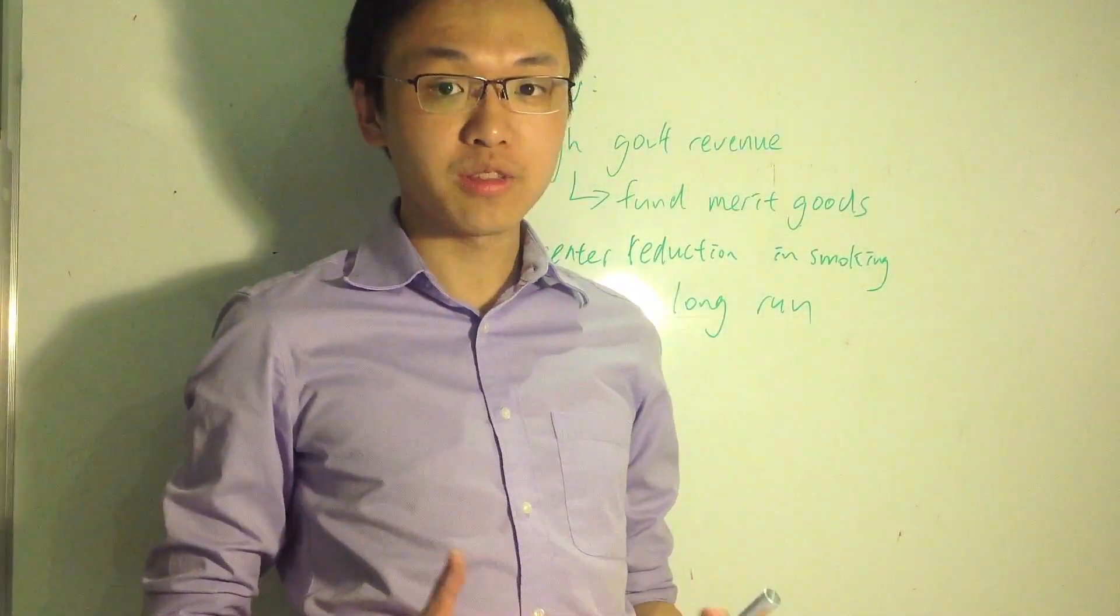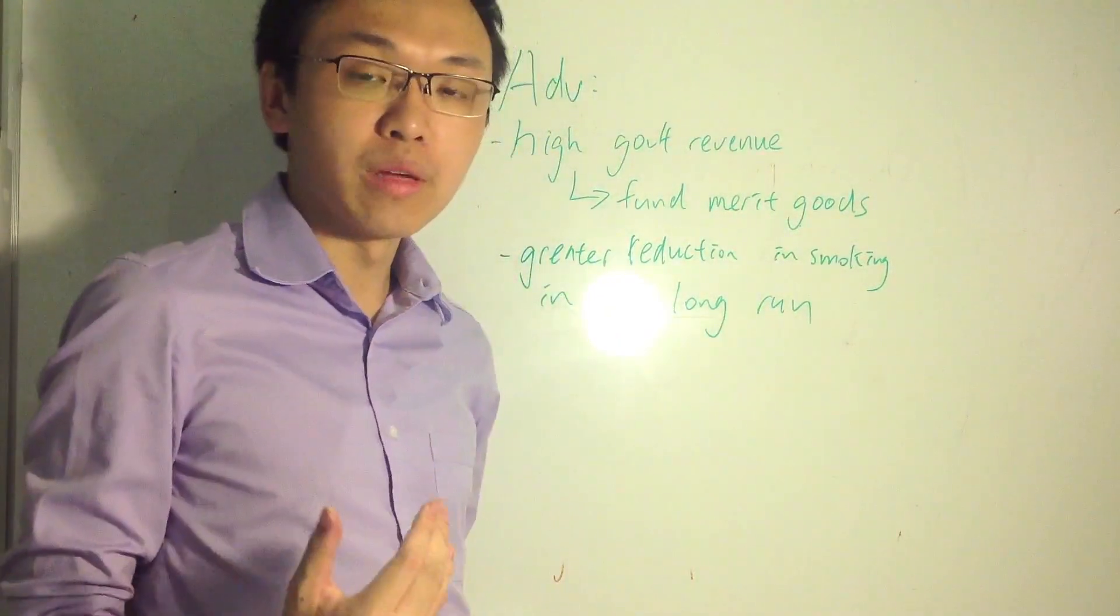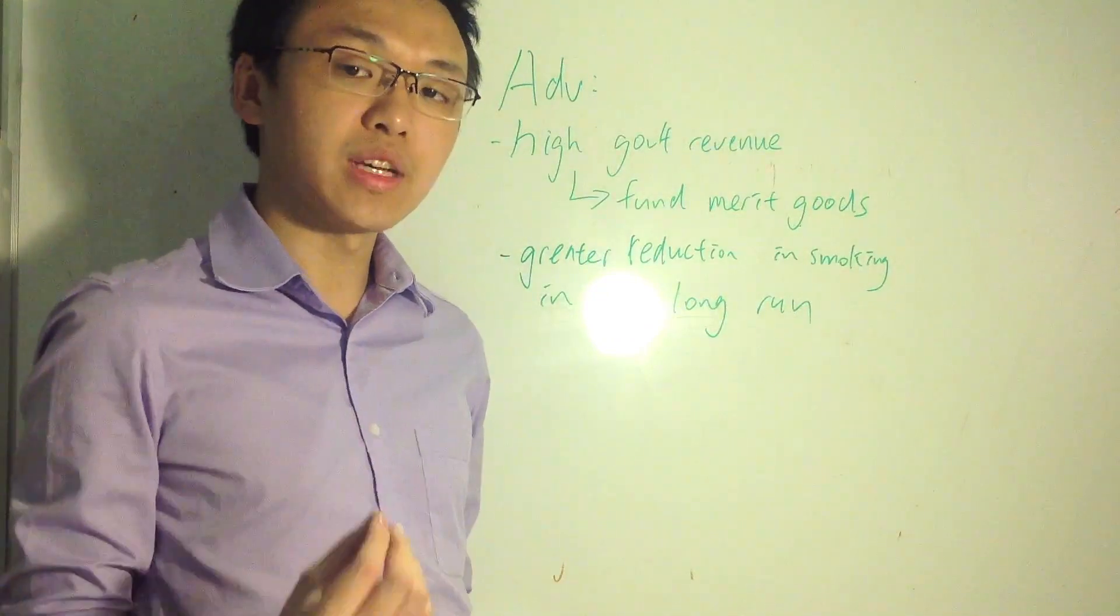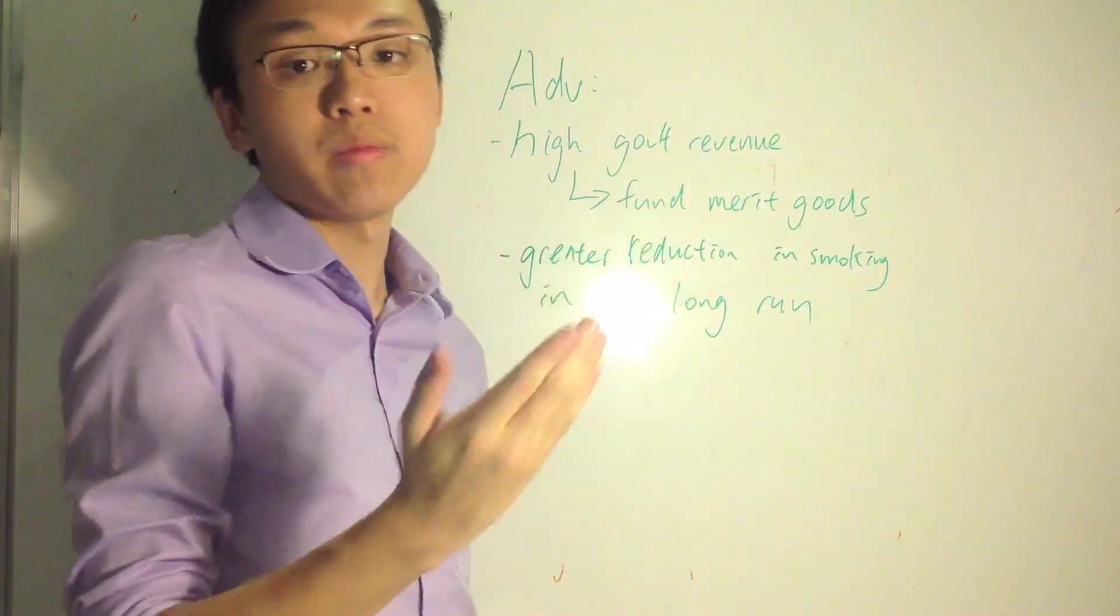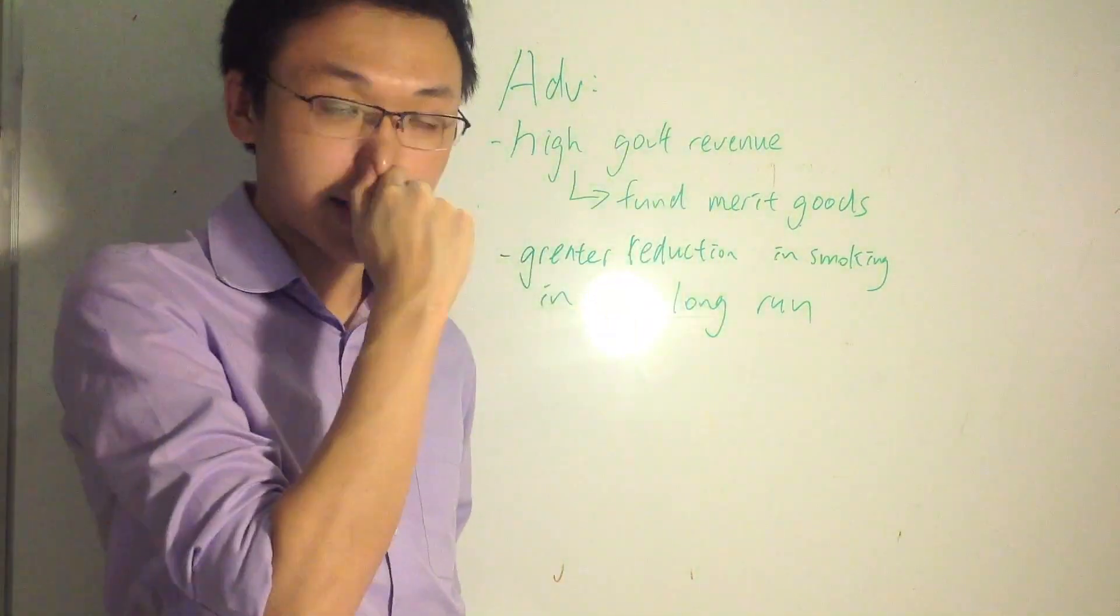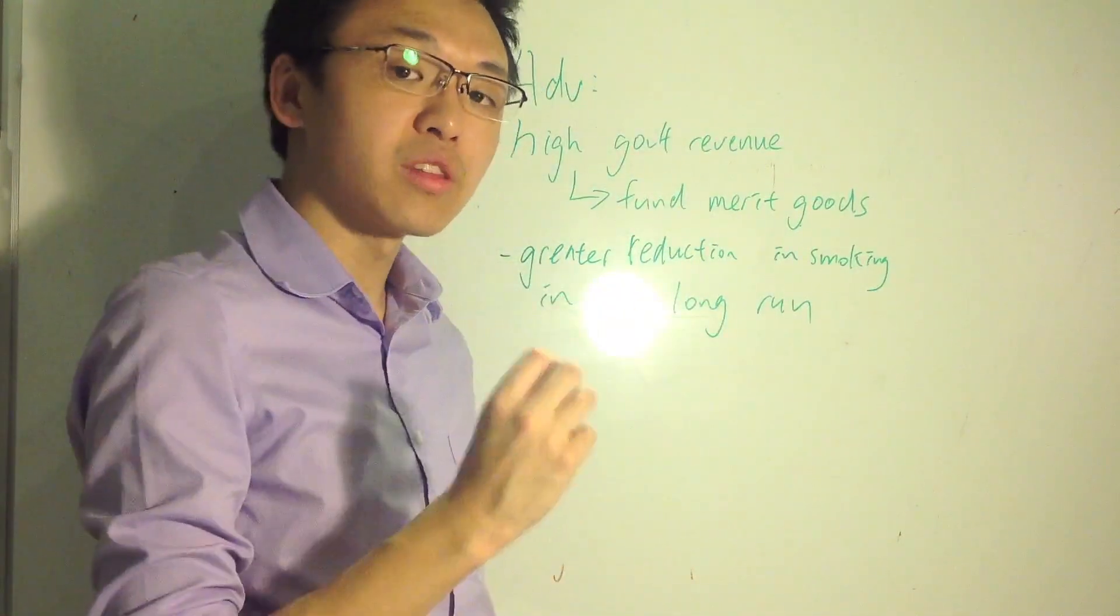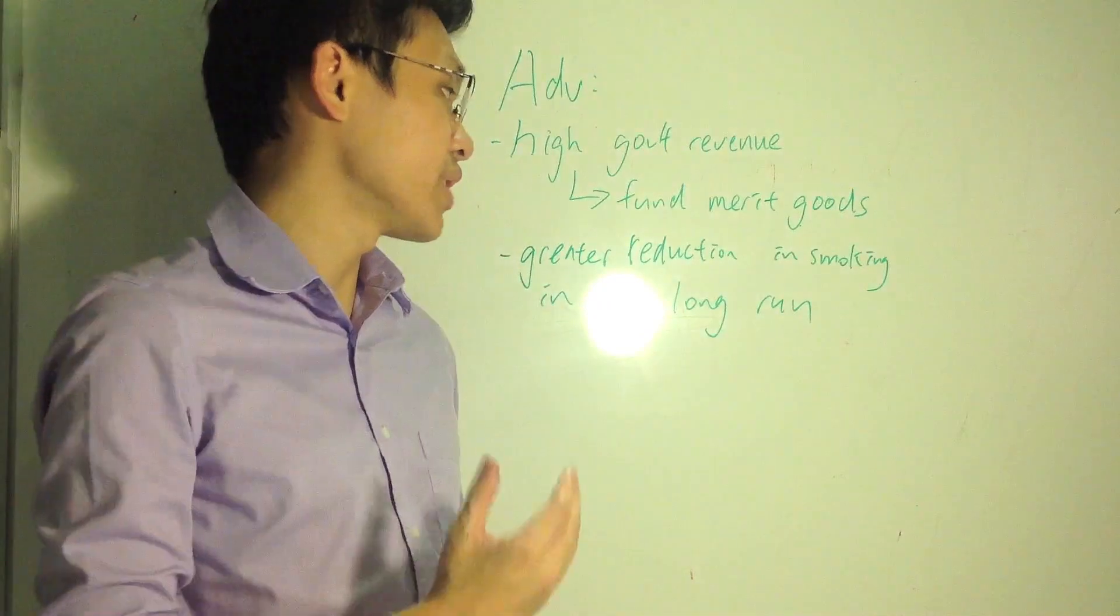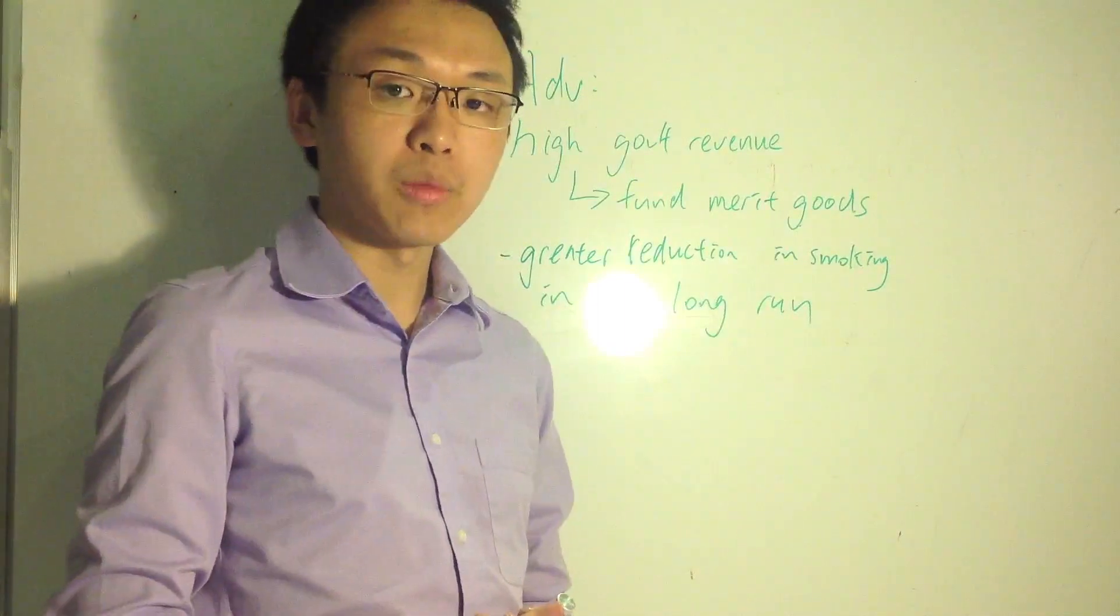In the same paragraph, you can also mention the advantages. So I believe there are two main ones. The first advantage is that because PED is low, it means the reduction in quantity demand is low. So therefore, government revenue tends to be relatively high because government revenue is actually tax per unit multiplied by units. So if the fall in quantity, fall in units is low, that means the government revenue is relatively high. The high government revenue can be used to fund, the government can use the government revenue to fund the production of merit goods. And the second advantage, I would say, is that in the long run, the reduction of smoking tends to be greater because elasticity increases over the long run as consumers have time to pick their alternatives.